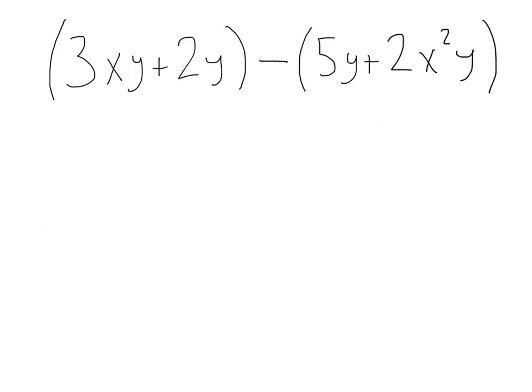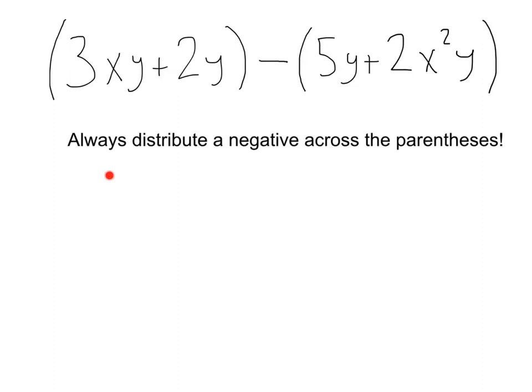Let's do one more. 3xy plus 2y minus 5y plus 2x squared y. Now this one's a little different from the last one. Here we have a subtraction sign rather than addition. This time, there's something very important you need to remember. So write this down. Always distribute a negative across the parentheses. Let me show you what I mean.